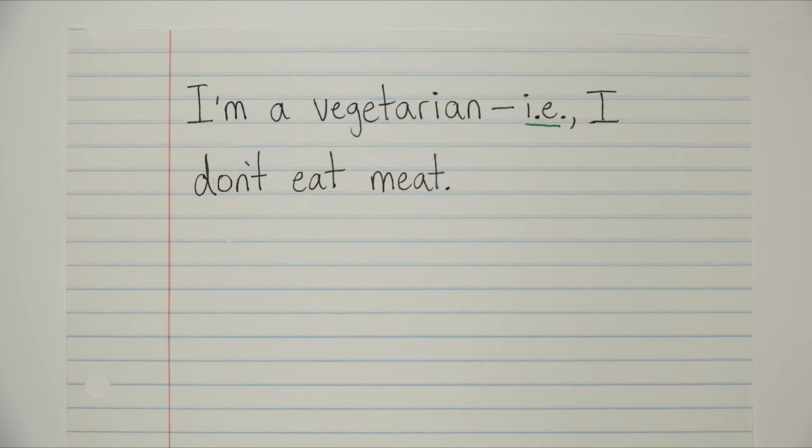Or how about this? I'm a vegetarian, i.e., I don't eat meat. Again, you're saying that you're a vegetarian. So, in other words, you don't eat meat. Pretty simple, right? Just keep paying attention to your punctuation, making sure everything's in the right place, and you're all good.